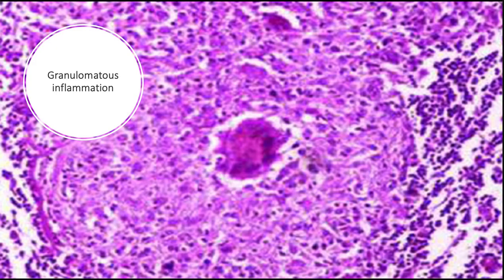Granulomatous inflammation is a distinctive form of mononuclear inflammation, usually evoked by infectious agents that resist eradication but are capable of stimulating strong T cell-mediated immunity, as in cases of Mycobacterium tuberculosis, Histoplasma capsulatum, and Schistosoma. Granulomatous inflammation is characterized by accumulation of activated macrophages called epithelioid cells, which may fuse to form giant cells, and in some cases there is a central area of caseous necrosis.